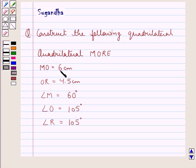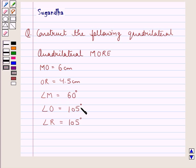The given measurements are: M-O is equal to 6 cm, O-R equal to 4.5 cm, angle M equal to 60 degrees, angle O equal to 105 degrees, and angle R equal to 105 degrees.